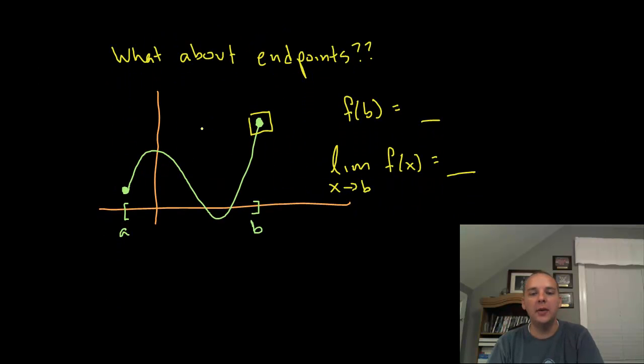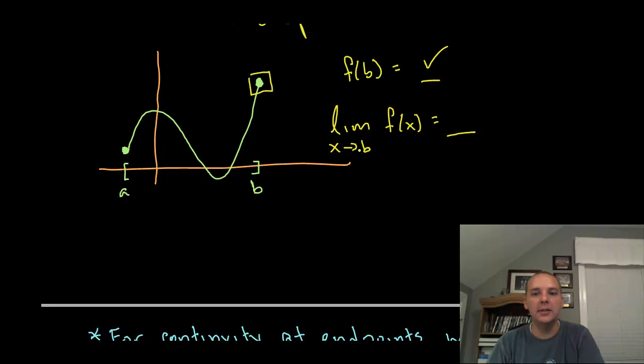Alright, now if you're very astute, you might have caught me a little bit here. You might have said, 'Wait a second, let's take a closer look at these endpoints,' because when you're running through those three items, that bullet point list of three items, like for instance this point right here f(b), that exists. But when you get real technical about it, what is the limit as x approaches b? Well if you remember your very technical limit discussions, that was what the function approaches from the left and the right hand side of b. And it approaches some number from the left but it doesn't approach anything from the right—it's not even defined to the right of b.